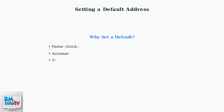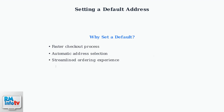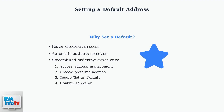Setting a default address streamlines your ordering experience. It enables faster checkout, automatic address selection, and a more efficient process overall. Simply access Address Management, choose your preferred address, toggle Set as Default, and confirm your selection.